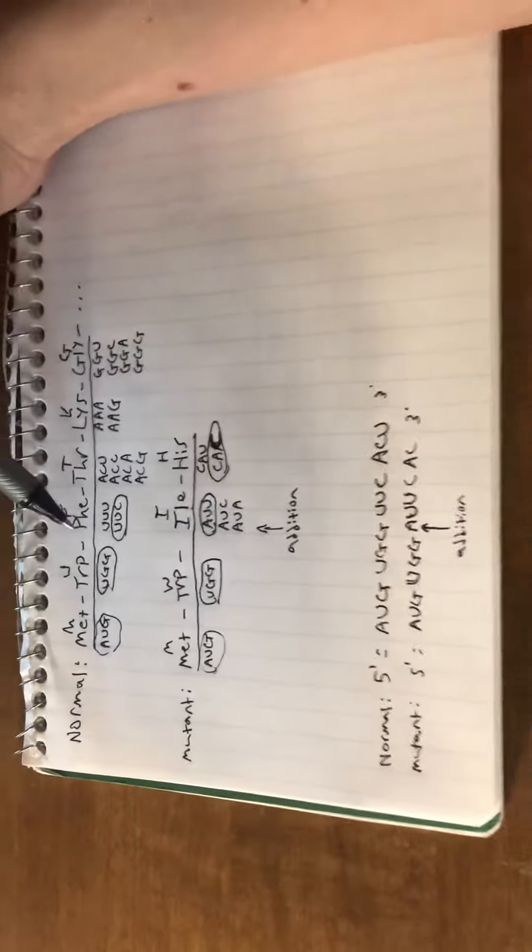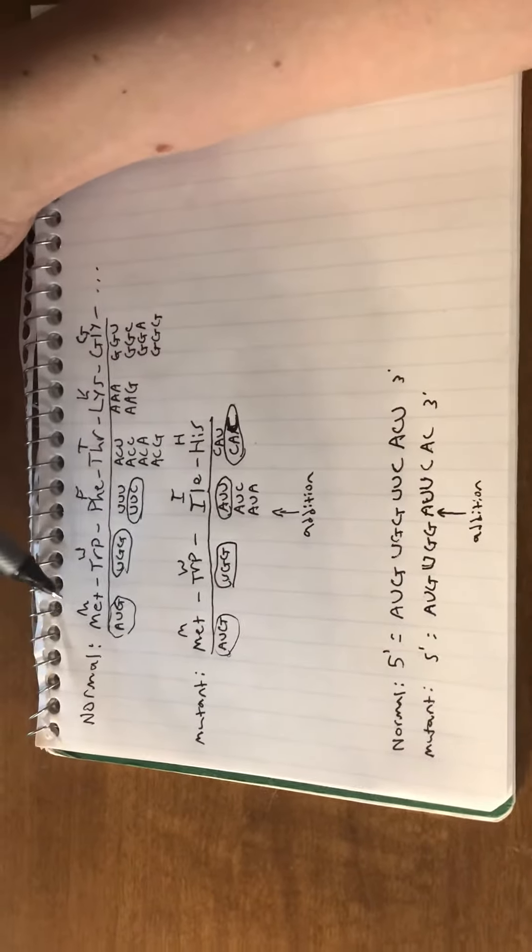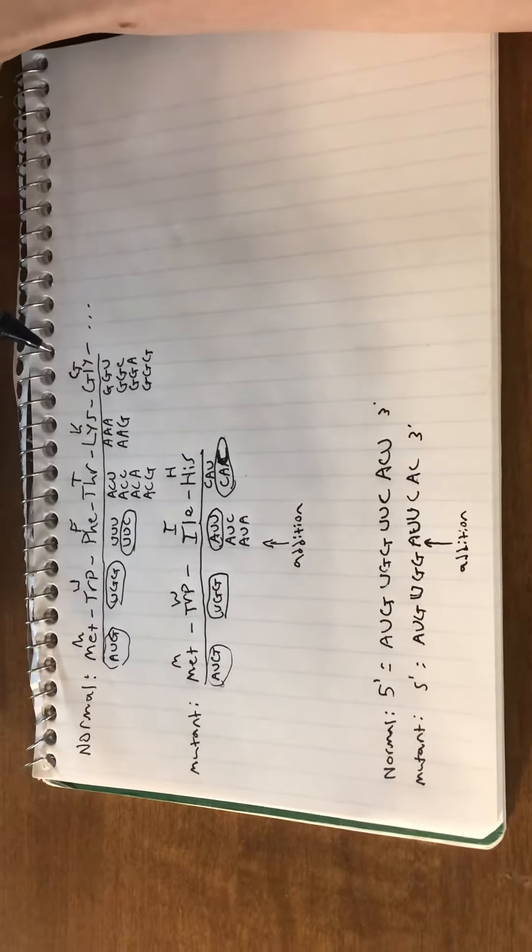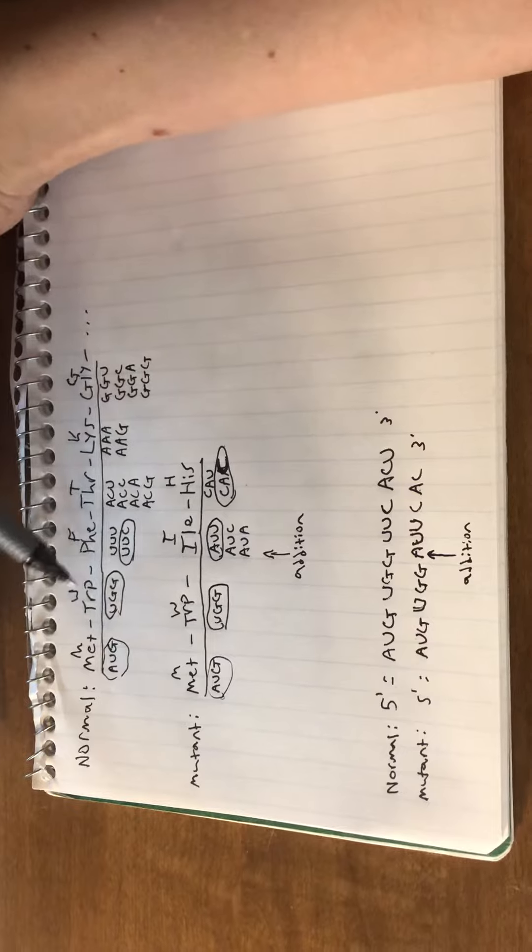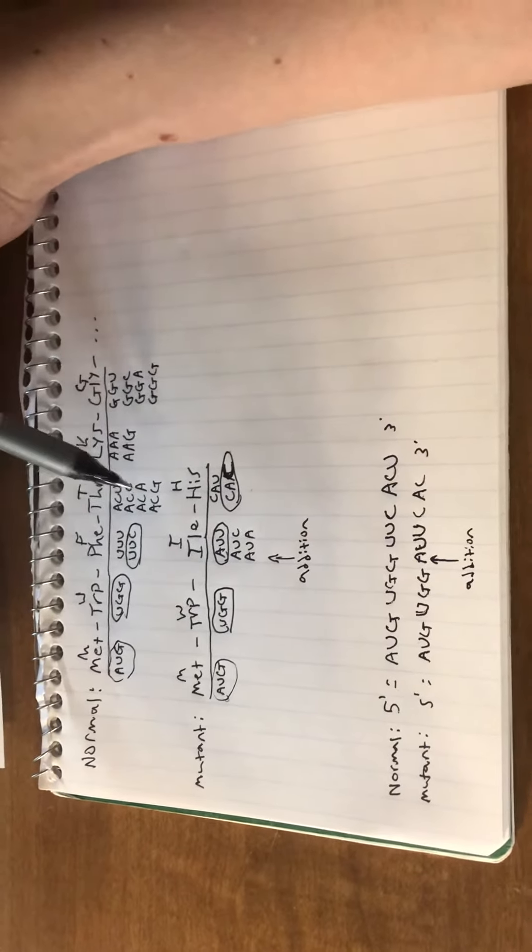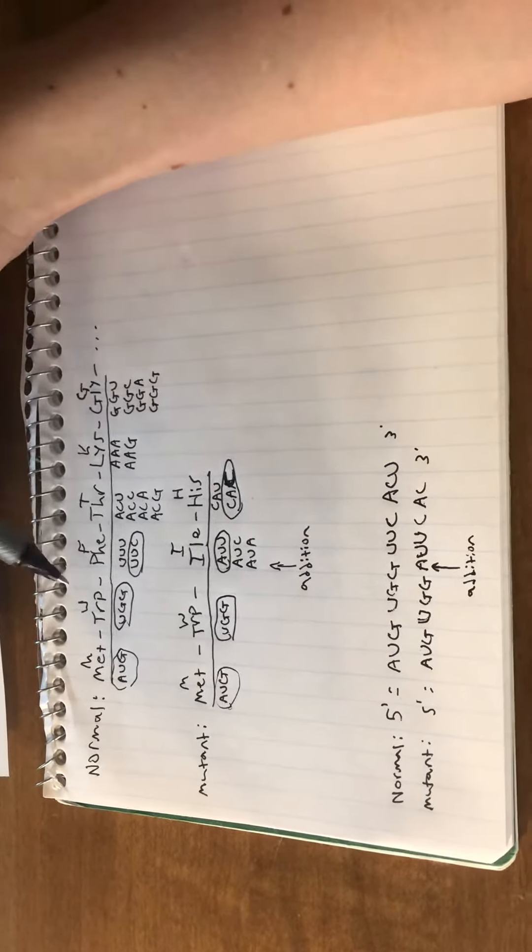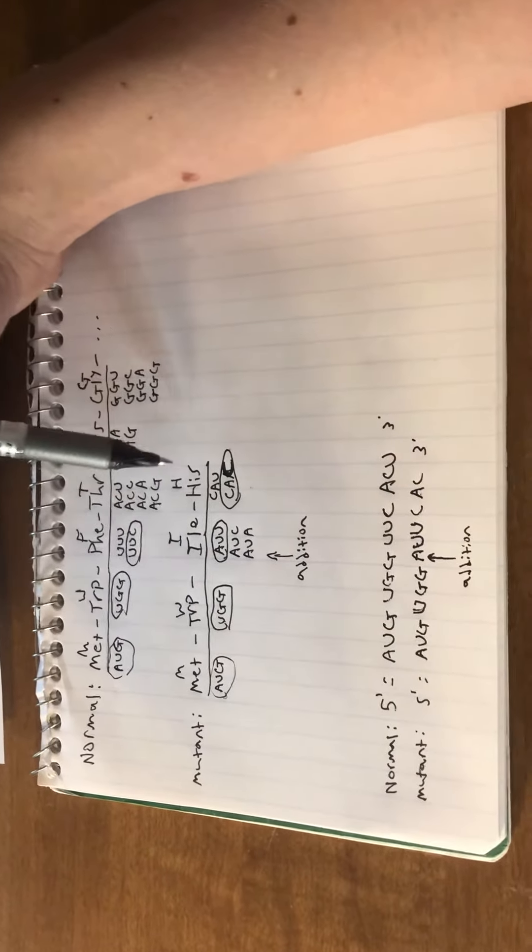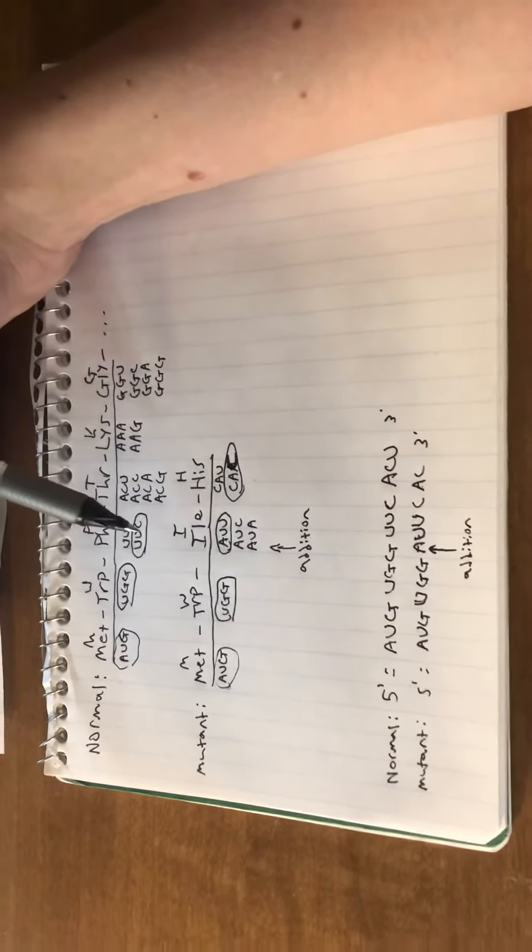As you can see here, I have an example of a normal protein with all the amino acids listed out and all of the possible codons below it for the set of amino acids. I've done the same thing with a mutant form of the protein.